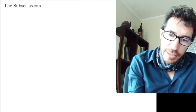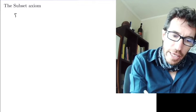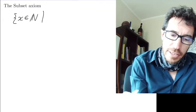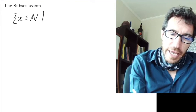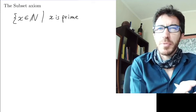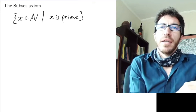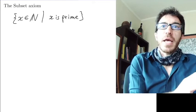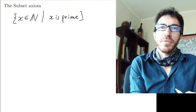Today we're going to be introducing the sixth axiom from our list for ZFC. It's called the subset axiom, and it's going to allow us to define things like the set of all x that belong to the natural numbers such that x is prime. So far we don't have anything that allows us to define a subset of elements with a certain property.